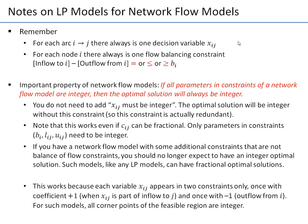An important property: if all parameters except costs — meaning supply, demand, lower bounds, and upper bounds — are integer, then the optimal solution of the network flow model will also be integer. So if you solve it in Excel, it will always give you an integer solution. This is not a coincidence; it has been proven that for all network flow models with integer supplies, demands, and bounds, the optimal solution is always integer.